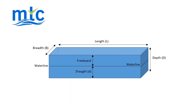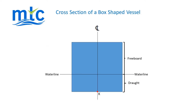Let's look at a box shaped vessel. In this diagram we can see the vessel's waterline, length, breadth, depth, freeboard and draft. In this cross-section of the vessel we can see the vessel's freeboard, draft, centreline and keel.